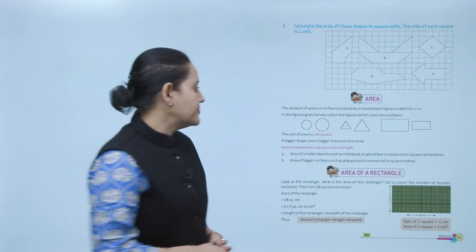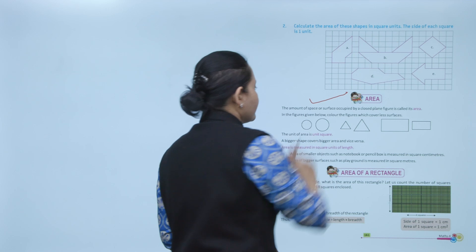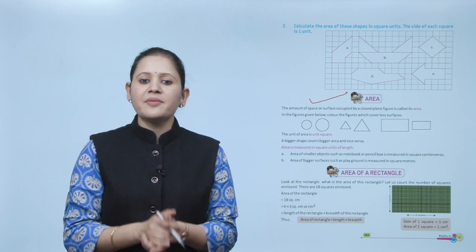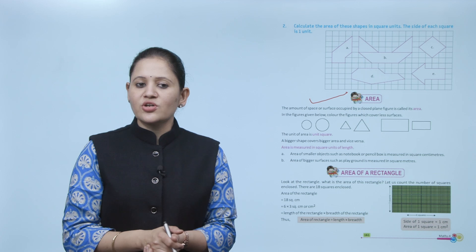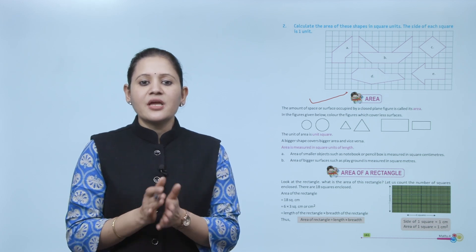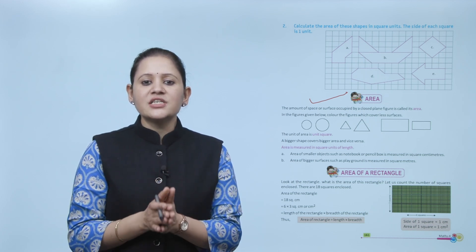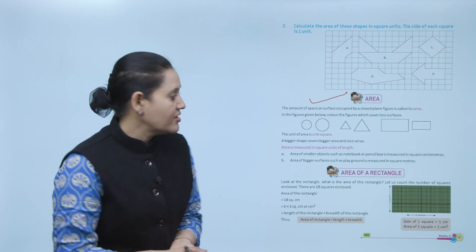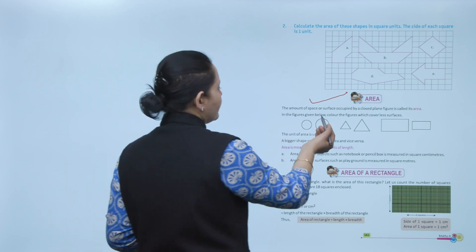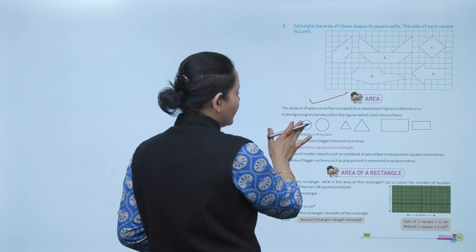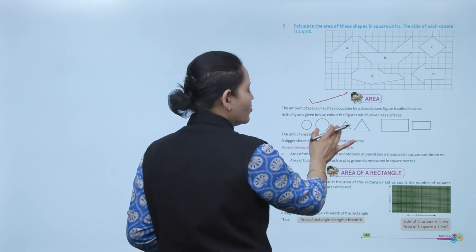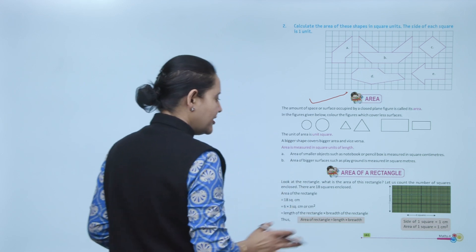The amount of space or surface occupied by a closed plane figure is called the area. In the given figure, color the figure which covers less surface. The smaller shape will cover less surface — the smaller one covers less surface.